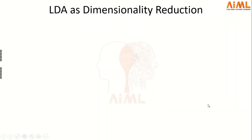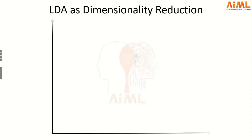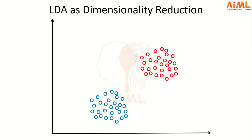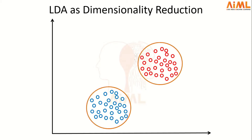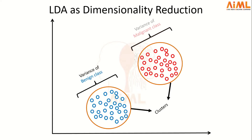Suppose we want to perform tumor classification. If we plot the data on a 2D graph, the data is classified into two categories: the blue category is the benign tumor category and the red category is the malignant tumor category. The data belonging to both categories is in the form of clusters, and we can clearly see there is a significant difference between the two clusters.